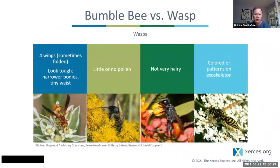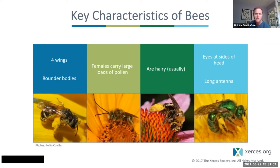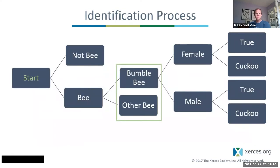Another animal you might mistake for a bee is a wasp. Most wasps are going to look very different from bumblebees. Wasps are very closely related to bees — they're in the same order — and they also have two pairs of wings. But unlike bees, they don't carry pollen. They're not very hairy; they have colored exoskeletons and tend to have these skinny waists. In comparison, bees are going to have rounder bodies, carry pollen, are usually hairy, and have their eyes on the side of their head.